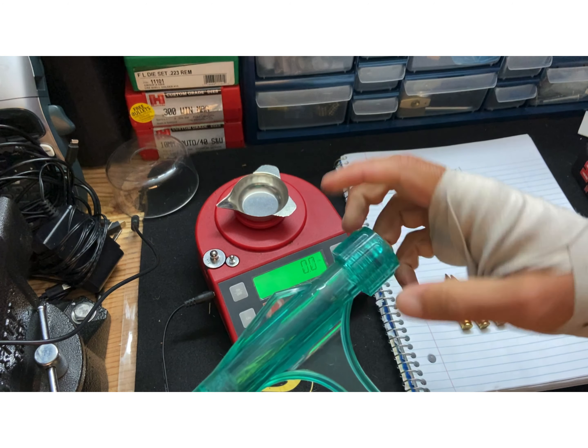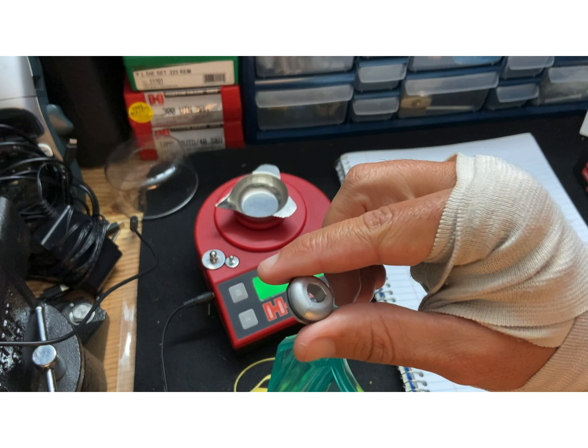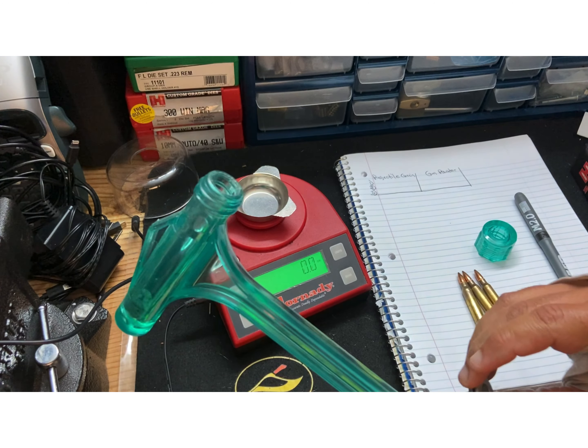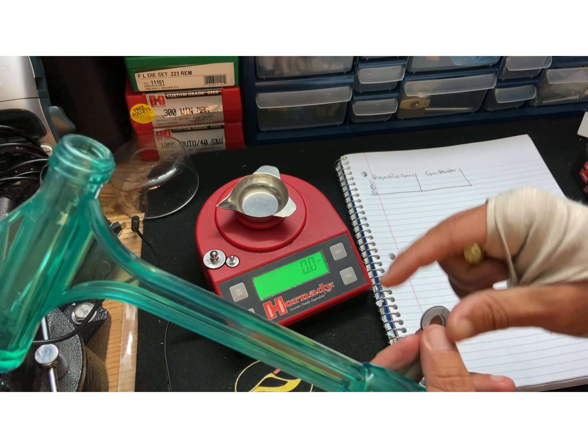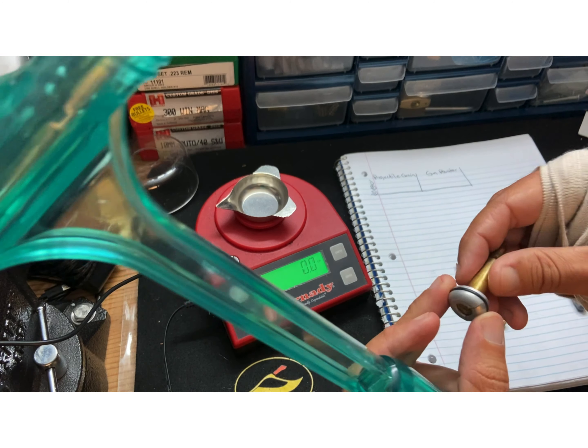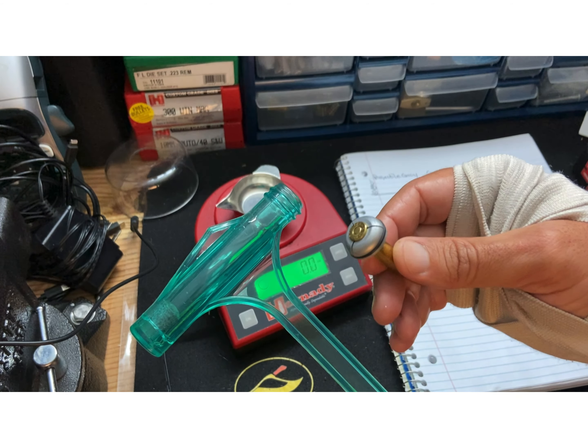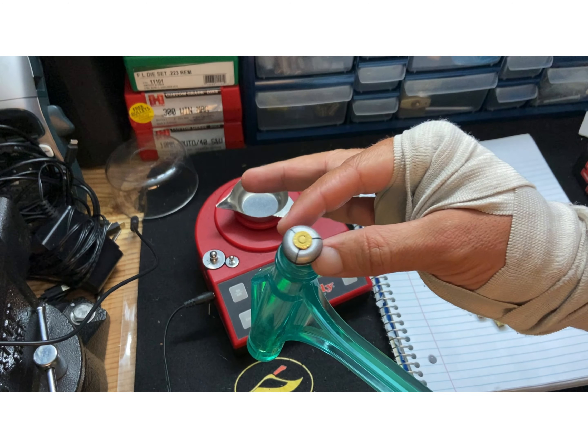Then come over here to my bullet puller, take this out. See this little piece right here? So you are going to put your projectile like this. You're going to sit it in here.